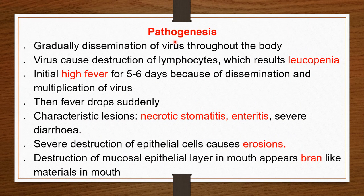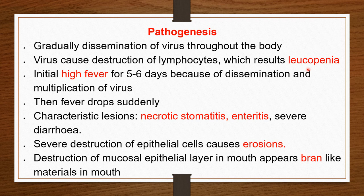Continuing pathogenesis: the virus gradually disseminates throughout the body. The virus causes destruction of lymphocytes, resulting in a decrease in leukocyte numbers — a condition called leukopenia. Because of this multiplication and dissemination of the virus, it causes high fever. Initially there is high fever for 5 to 6 days due to the dissemination, spread, and multiplication of the virus in the body.